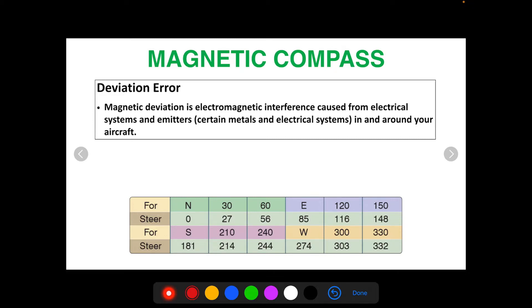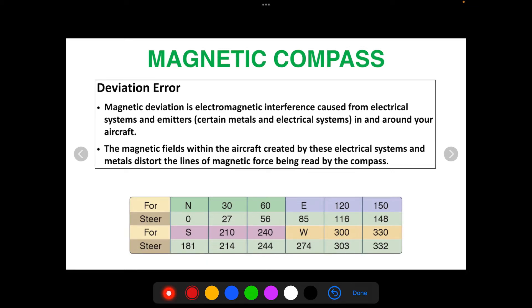So magnetic deviation is electromagnetic interference caused from electrical systems and emitters, which are certain metals and electrical systems in and around your aircraft. The magnetic fields within the aircraft created by these electrical systems and metals distort the lines of magnetic force being read by the compass.